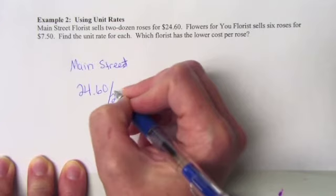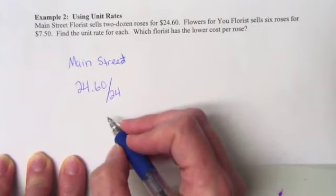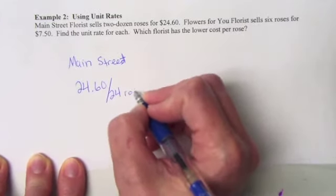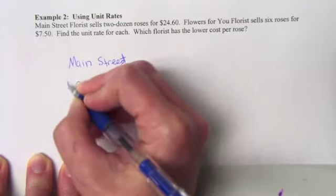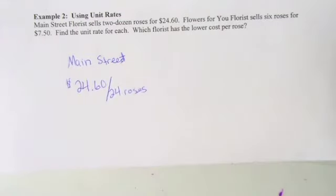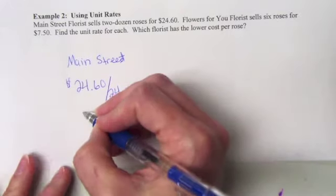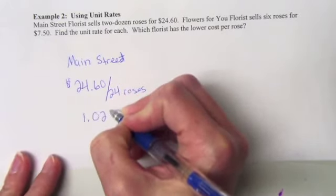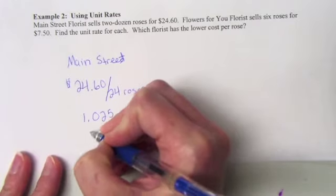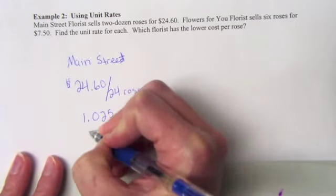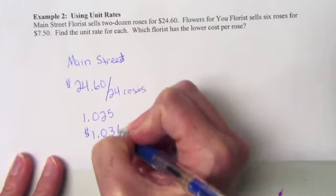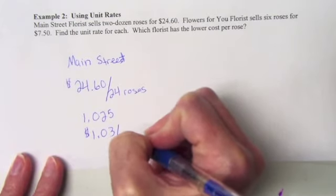If we divide this out, we're going to be able to get our unit rate. So we take 24.60 divided by 24 roses. You get 1.025. So we're going to round that to the nearest hundredth, 1.025 rounds to 1.03. So that's $1.03 for every one rose. So that is our unit rate at Main Street florists.